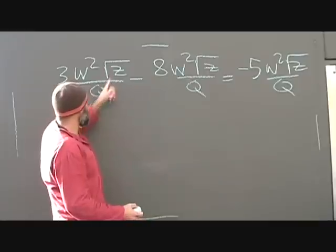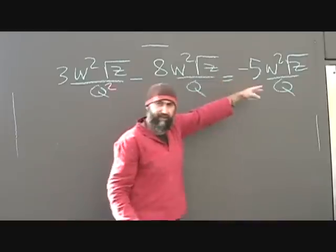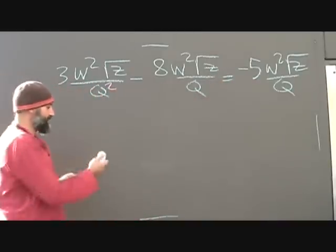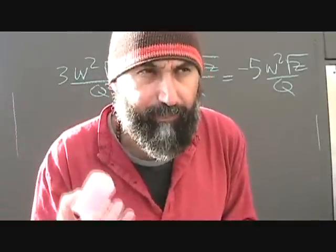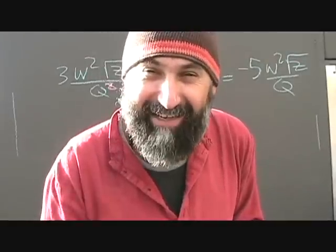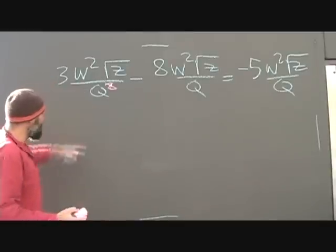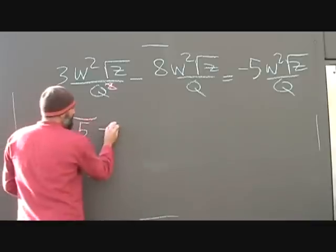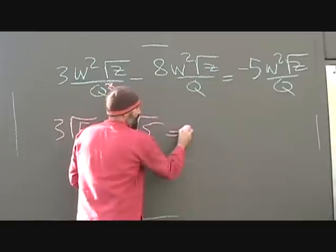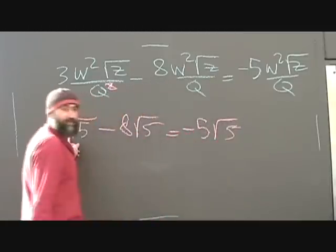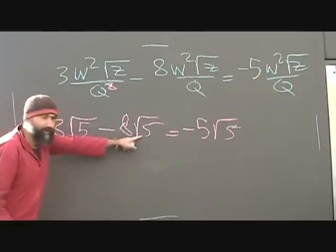If there's any difference — for example, if one term had q squared instead of matching — then you can't add or subtract them. This is super important because once you get into radicals, the same rule applies: you can only add and subtract like radicals. For example, 3 square root of 5 minus 8 square root of 5 equals negative 5 square root of 5, because it's just 3 minus 8.